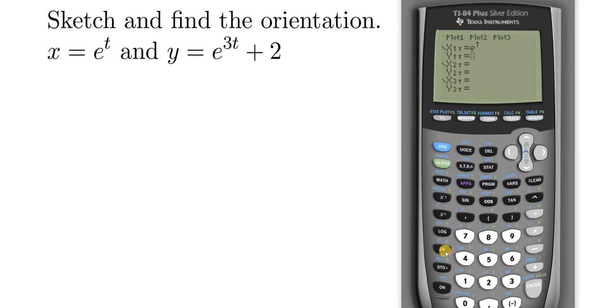So second, LN, and this time the exponent is 3t. I'm going to hit the right arrow key, and then plus, and then two, and then enter. Okay, so we have our parametric equations.